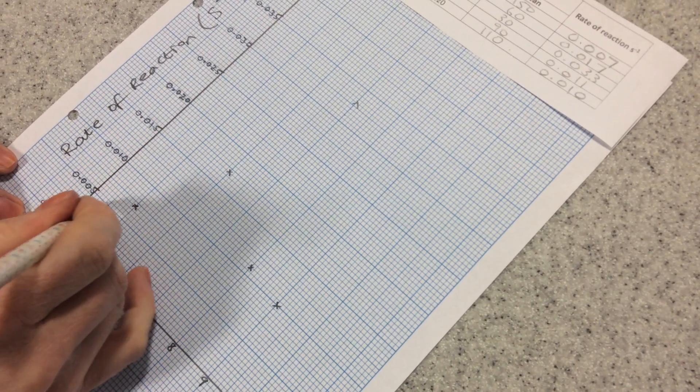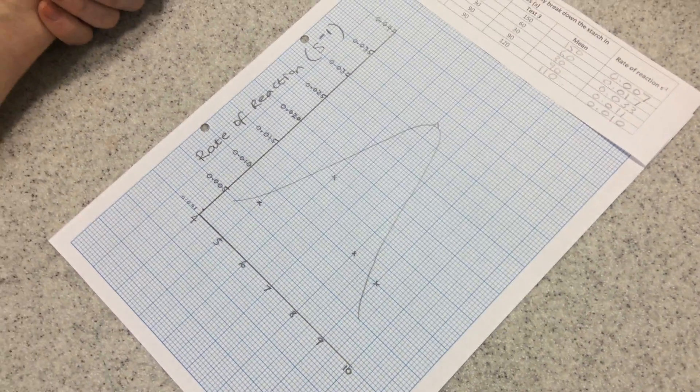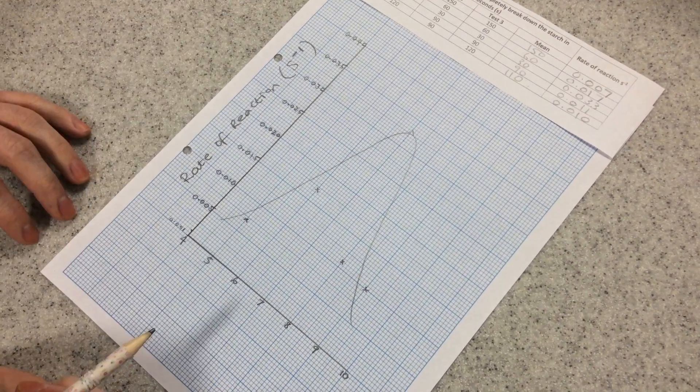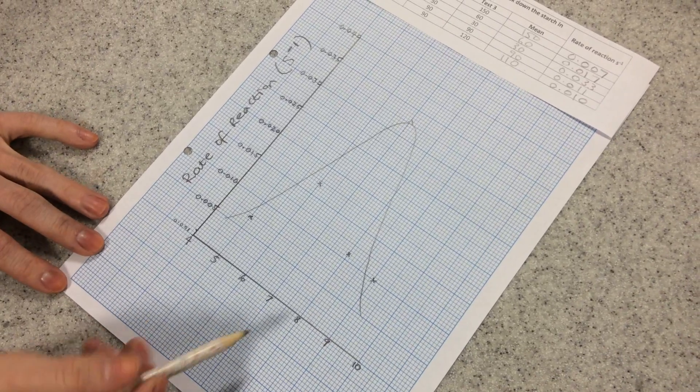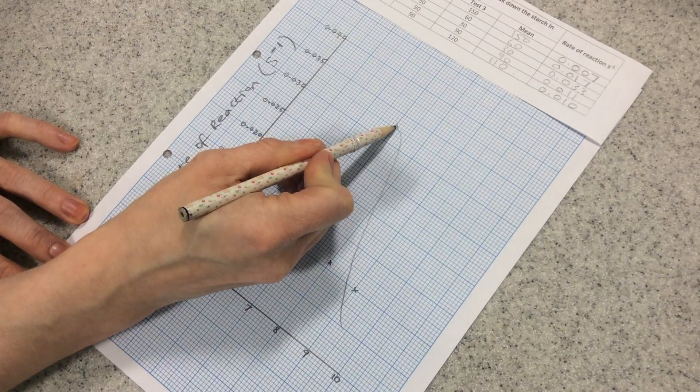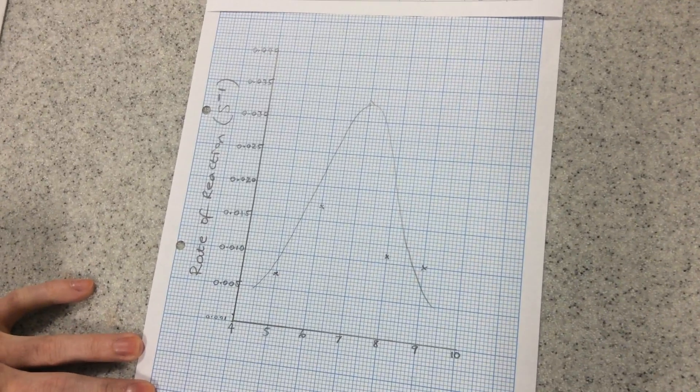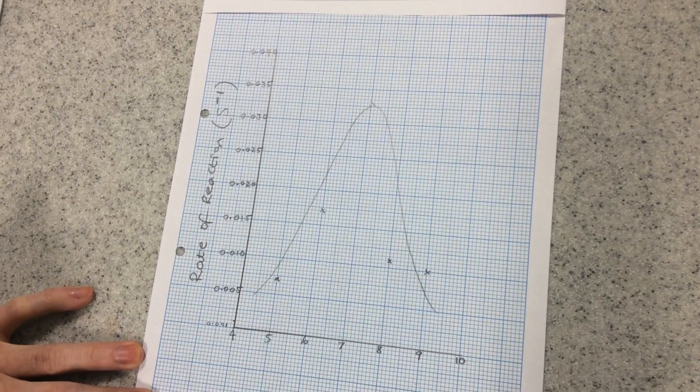So I'll do a nice line of best fit, so in this case it's a curve. And I can conclude now that the fastest or optimum pH was pH 7, which gave us a 0.033 rate of reaction. And therefore amylase works best at the optimum pH of 7.